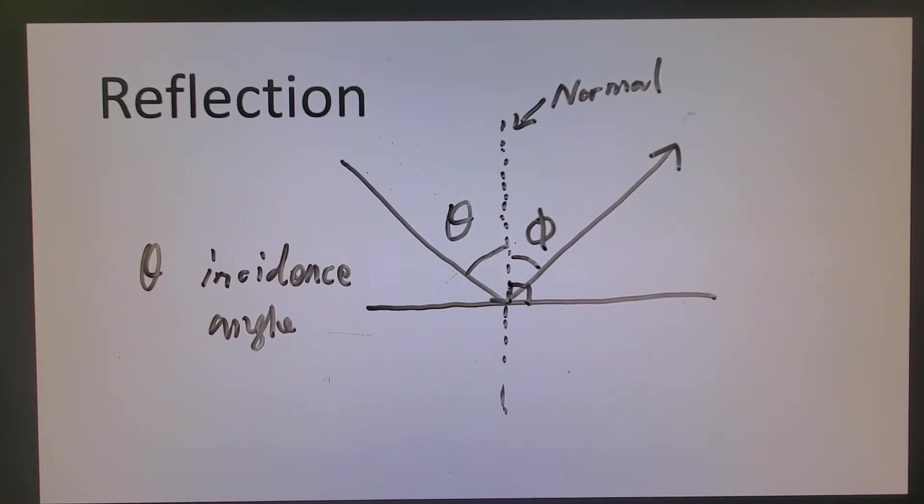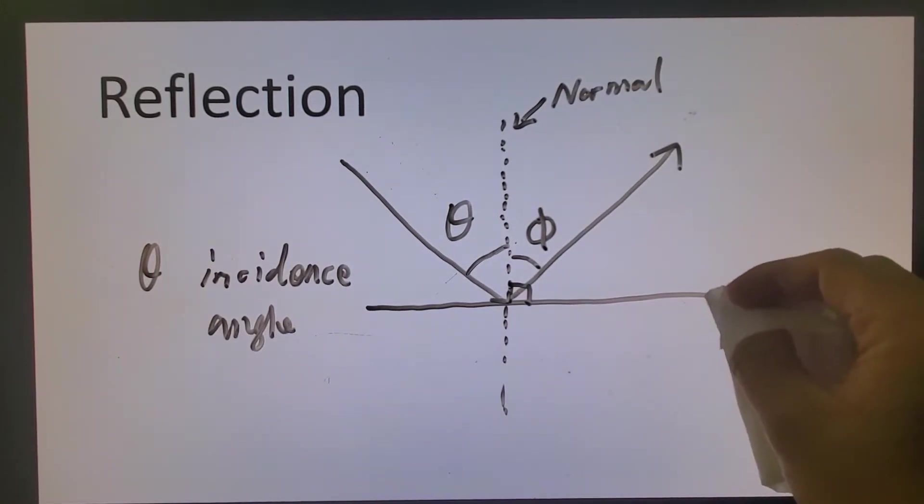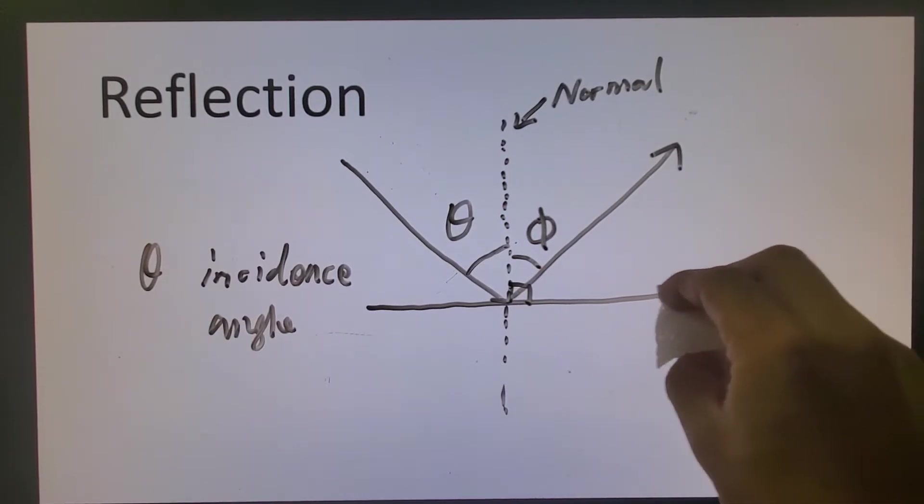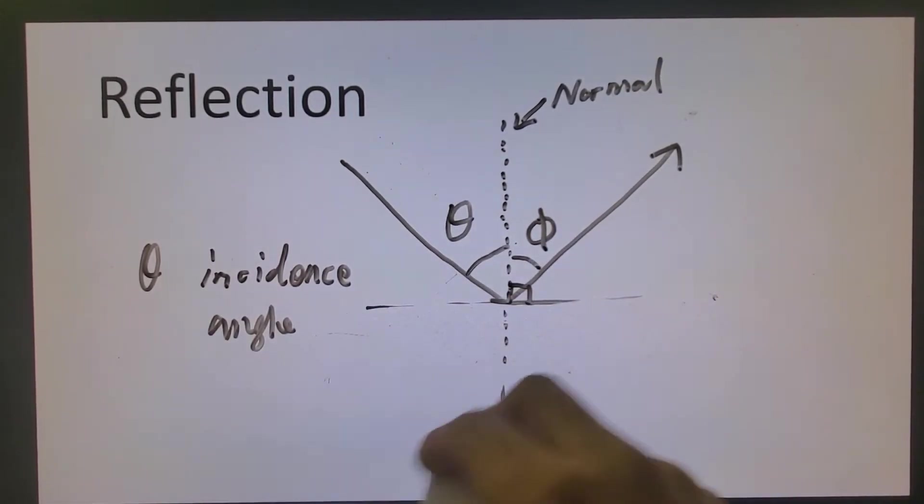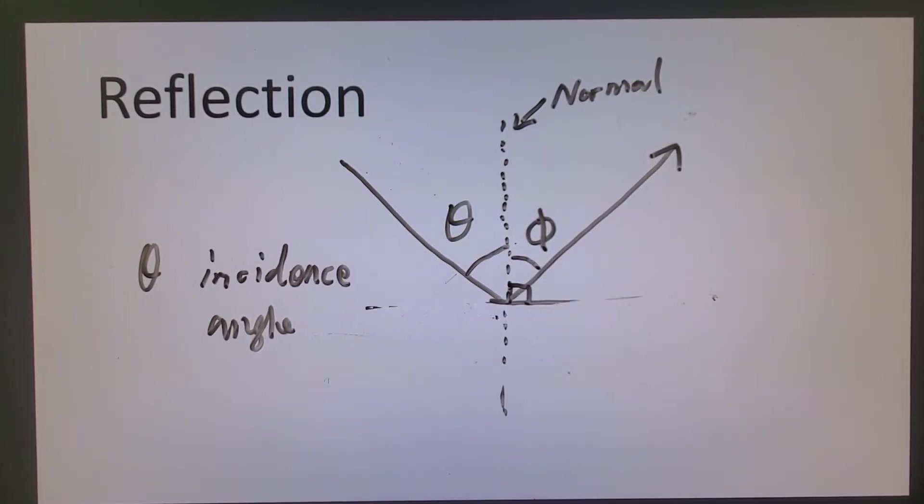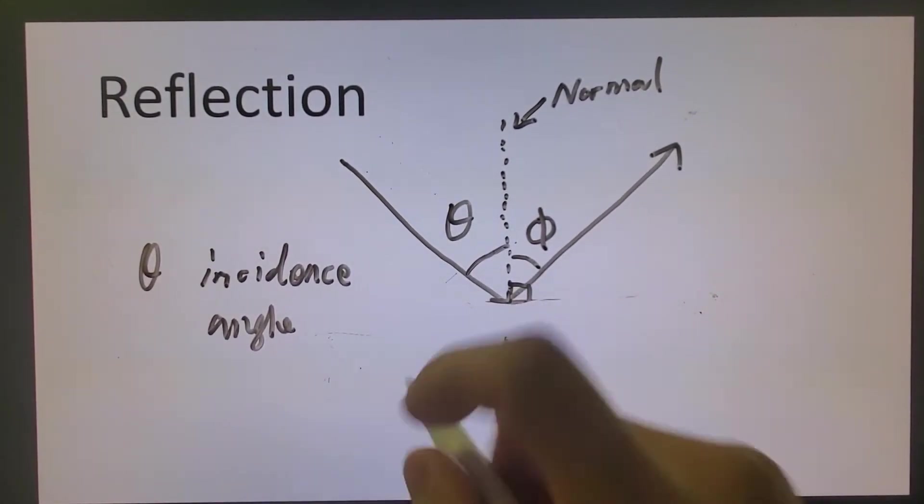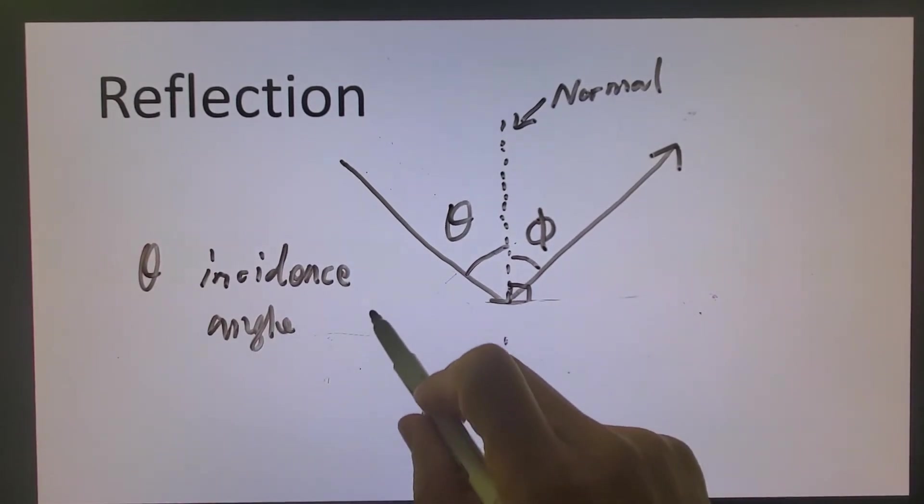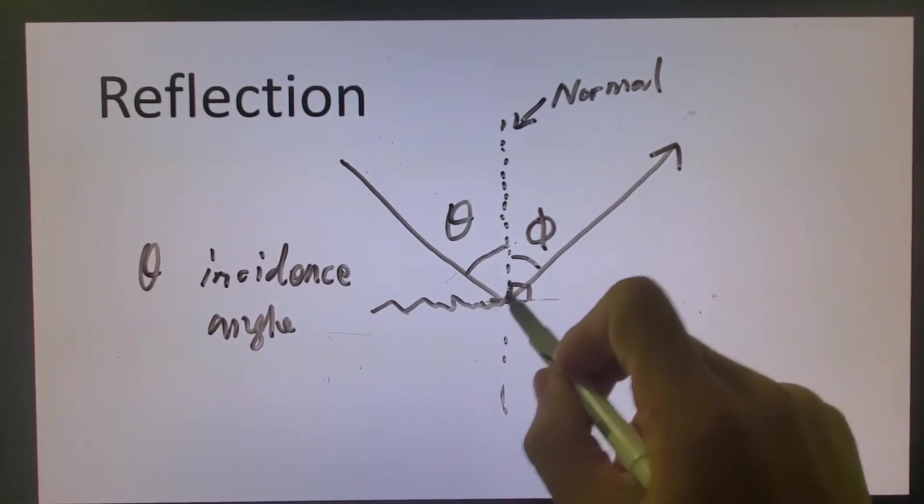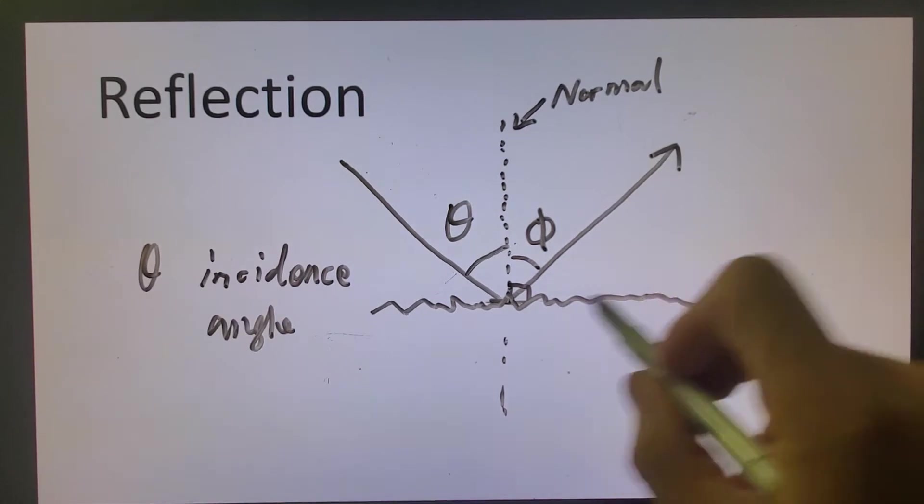So not always that we have a very smooth surface. For example, if the surface is not very smooth. If you use a microscope and you look into it, magnify it, what you're going to see is if you magnify it enough, you're going to see it rough.